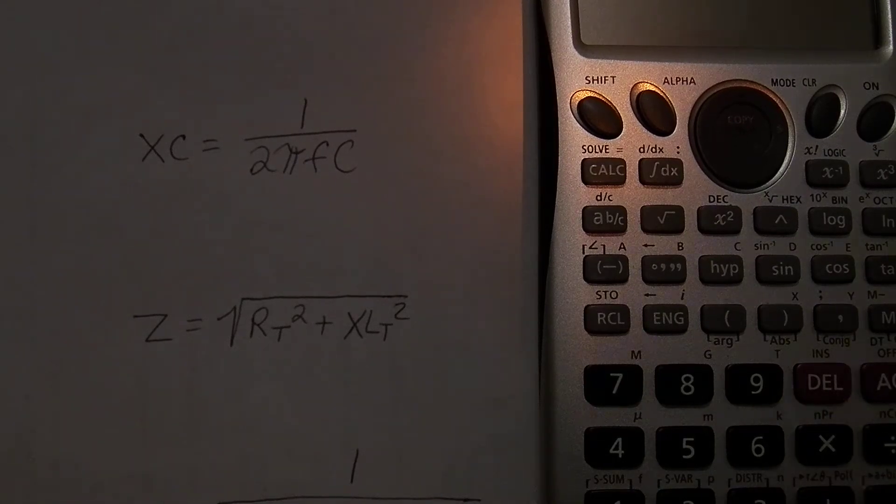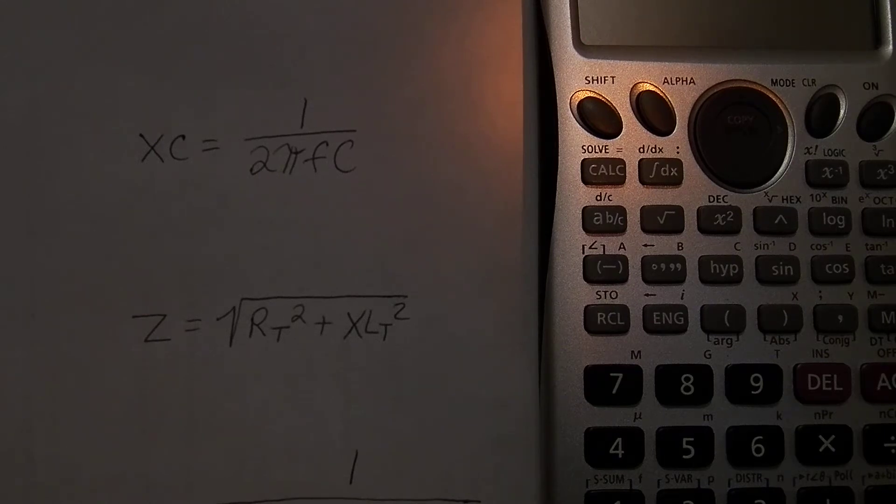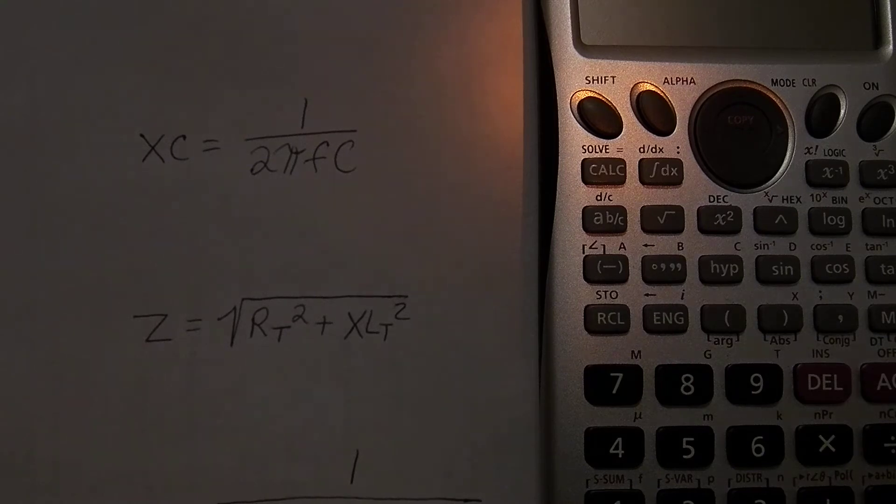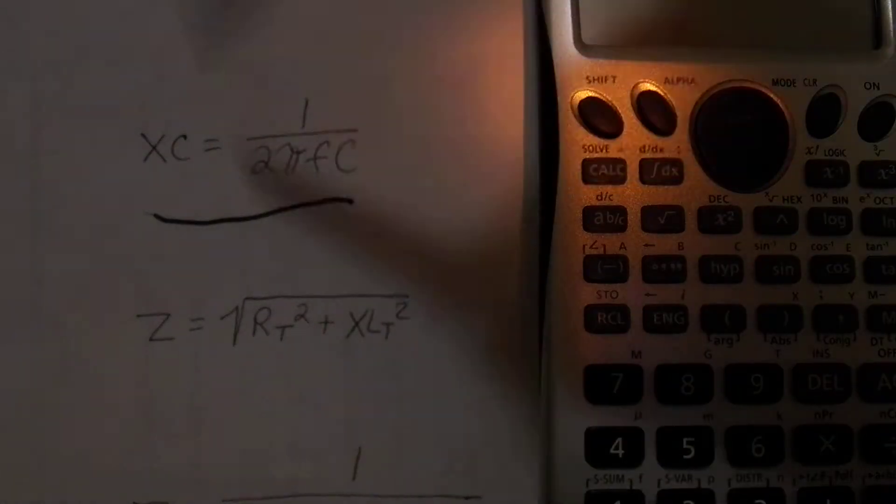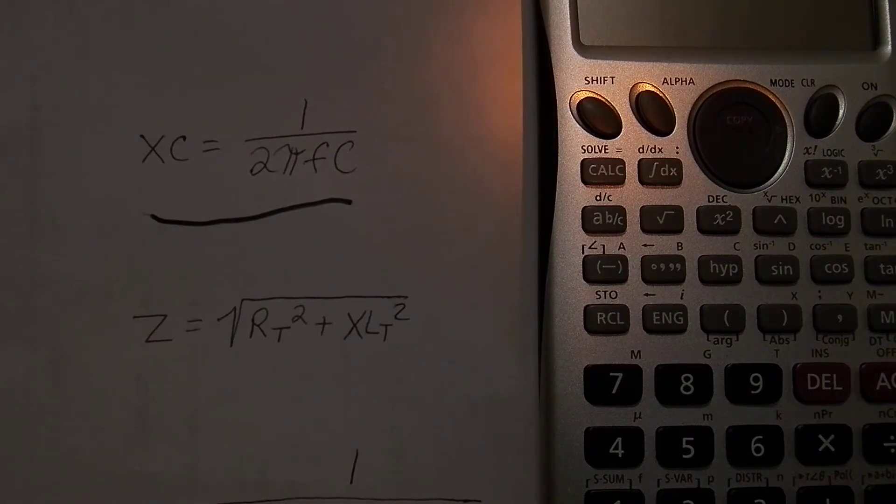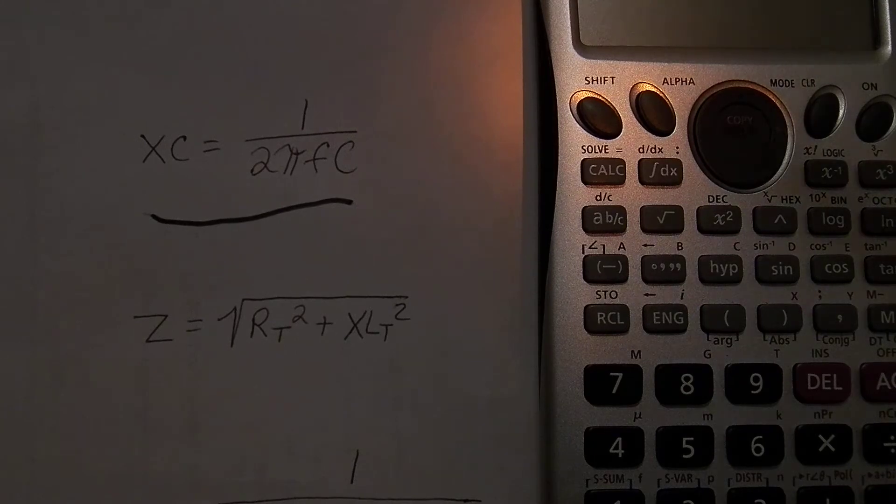Alright, so what we're looking at here is RL and RC calculations and their order of operations. So right here you see the XC or the capacitive reactance formula. Now when you want to put that into your calculator, you will first do the 2πFC.